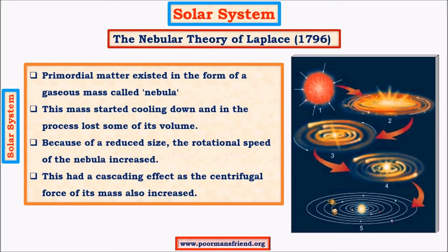Nebula is a huge mass of dust and gases which has angular momentum, and with the coalescence of atoms there is enhancement in angular momentum. As a result, the nebula itself starts rotating, and at this stage there are two forces acting on it. One is the centrifugal force acting outwards, and the other is gravitational force acting towards the centre. These two forces balance each other to give rise to a disc formation during the birth of the star.